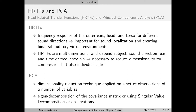Because of this multidimensionality, it is often necessary to reduce the number of dimensions involved in an HRTF model, so that this can be used for compression, but also individualization. A very common way to do this is using principal component analysis, or PCA, which is a dimensionality reduction technique commonly applied on a set of observations of a number of variables.